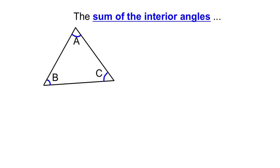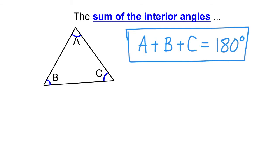The first angle property of triangles that we're going to look at is one that you already know: the sum of the interior angles. Here I have a triangle with the angles labeled as A, B, and C. Like in the warm-up, the interior angles have to add up to 180 degrees. So the rule is A plus B plus C equals 180 degrees.